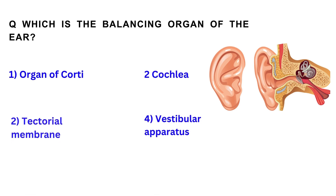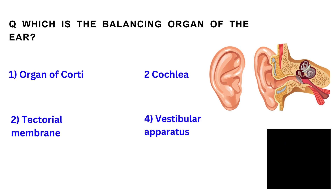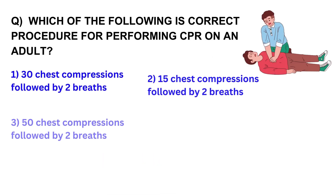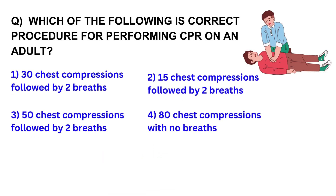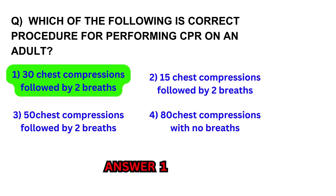Which is the balancing organ of the ear? Vestibular apparatus. Which of the following is the correct procedure for performing CPR on an adult? 30 chest compressions followed by 2 breaths.